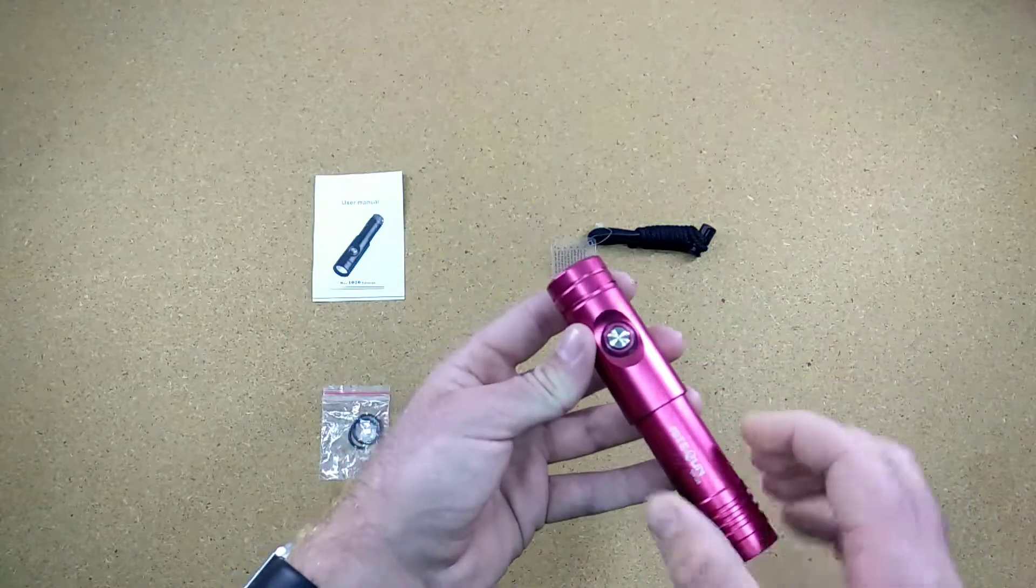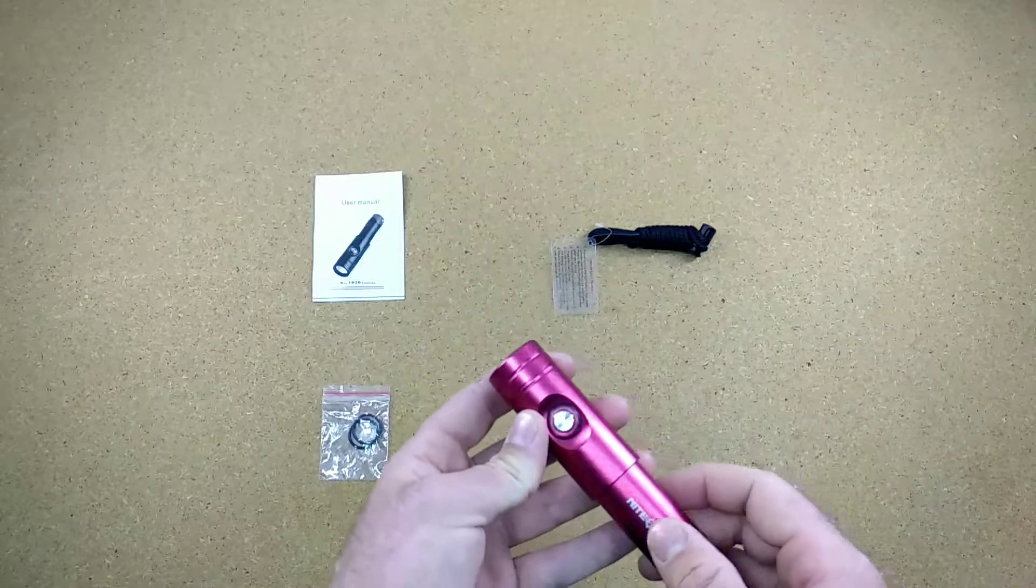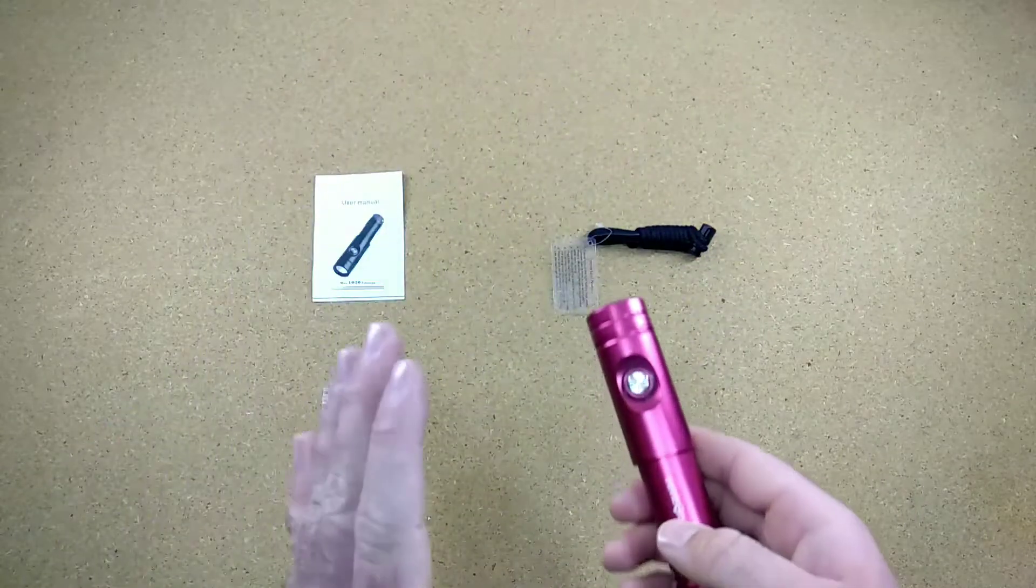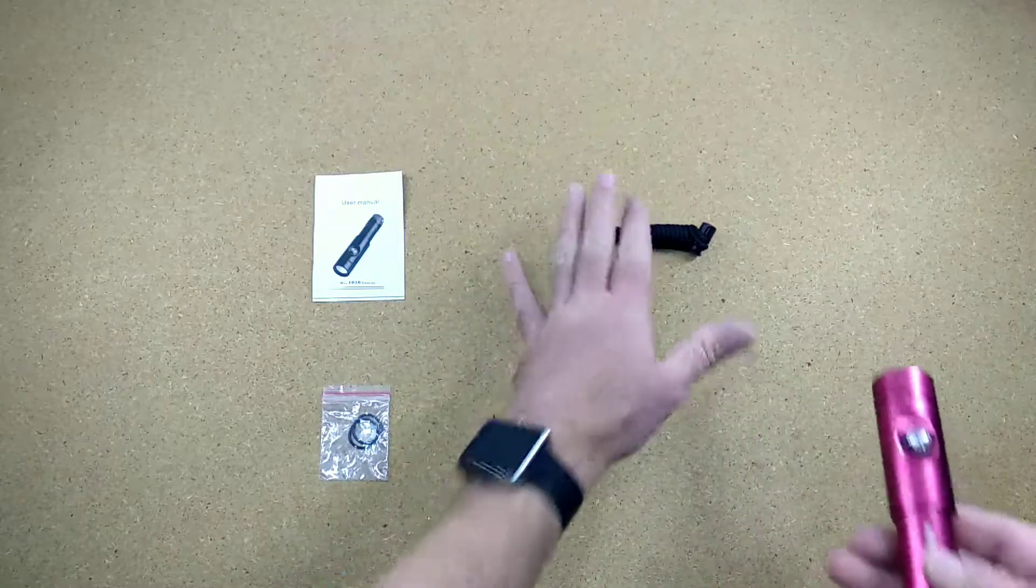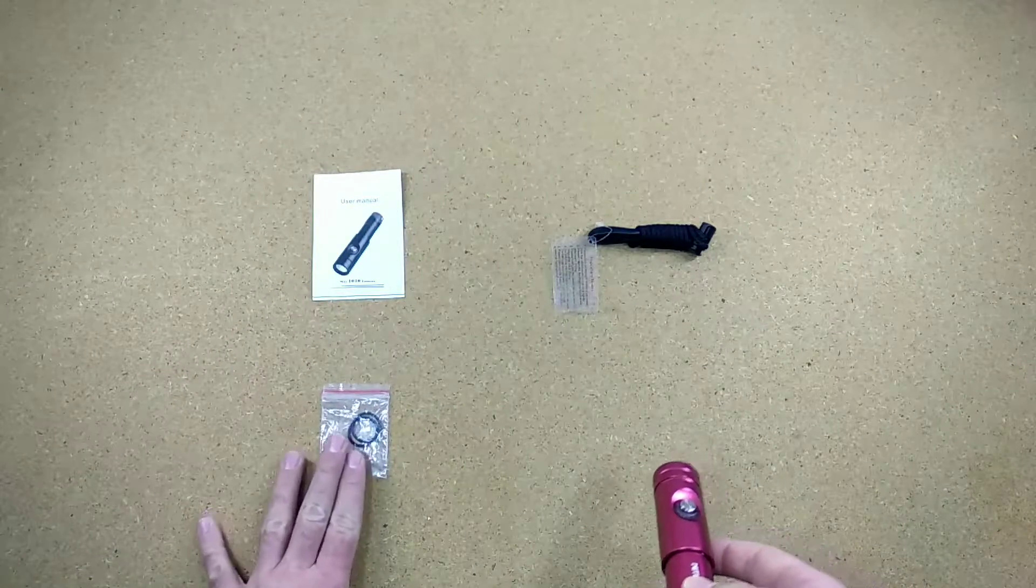The torch itself is powered by one 18650 battery, which depending on what package you are getting is not included. But what we are seeing here is the basic package. This will always be included: obviously the torch, a lanyard to fix in the back mounting hole, a user manual, and an extra set of o-rings.